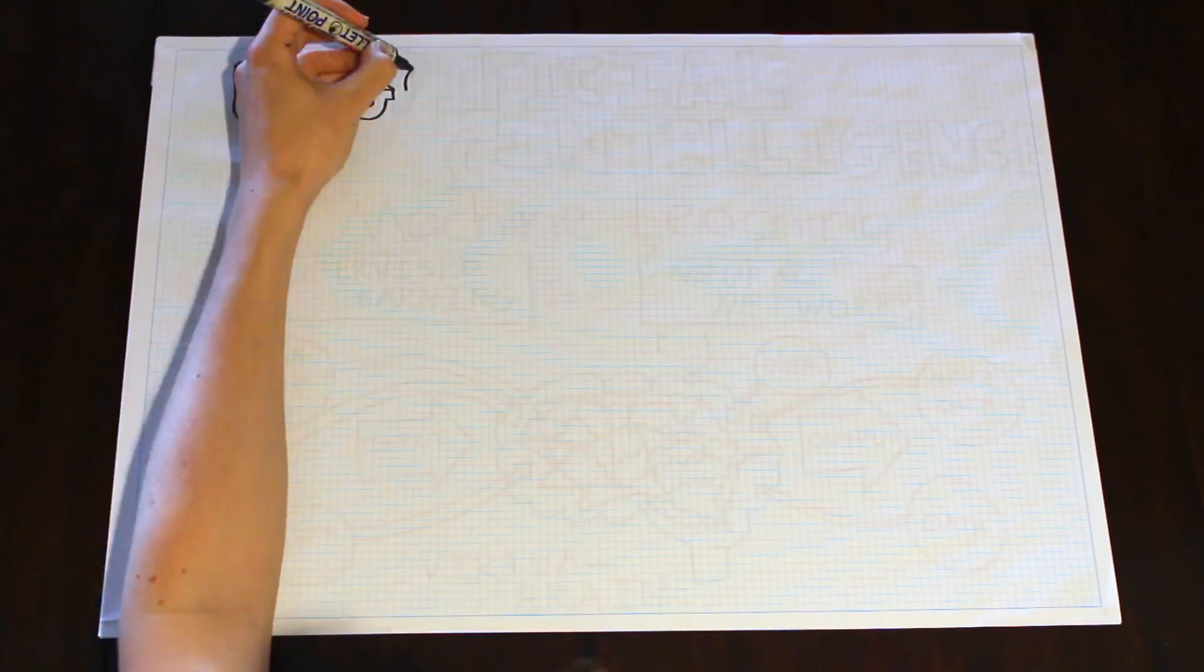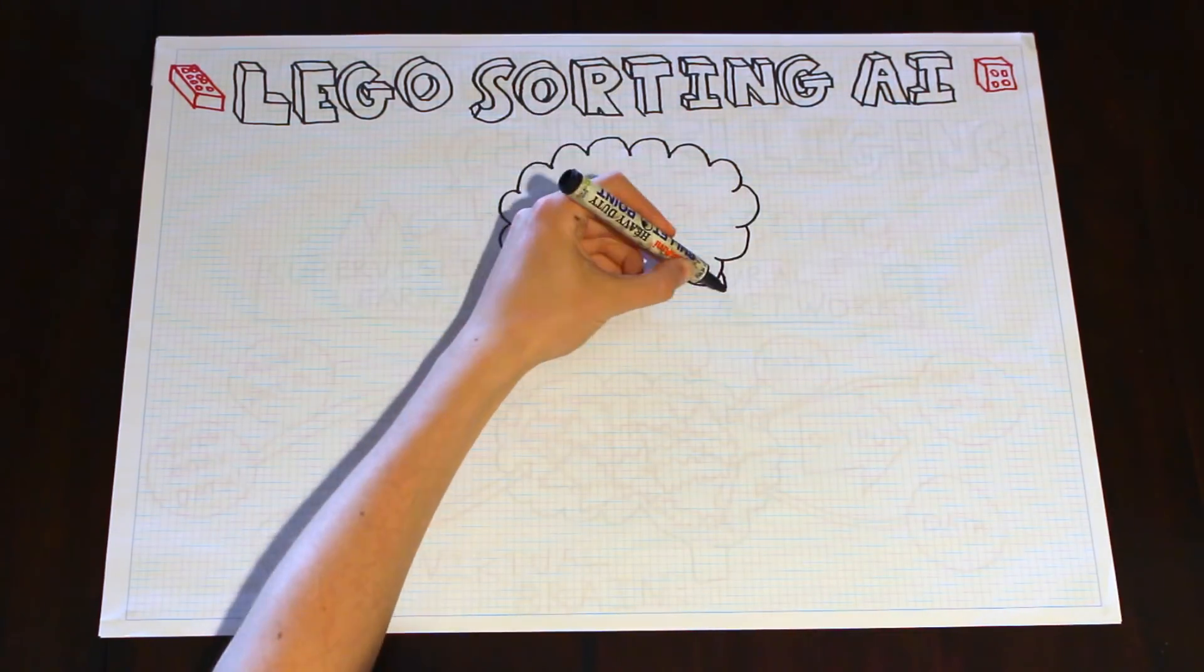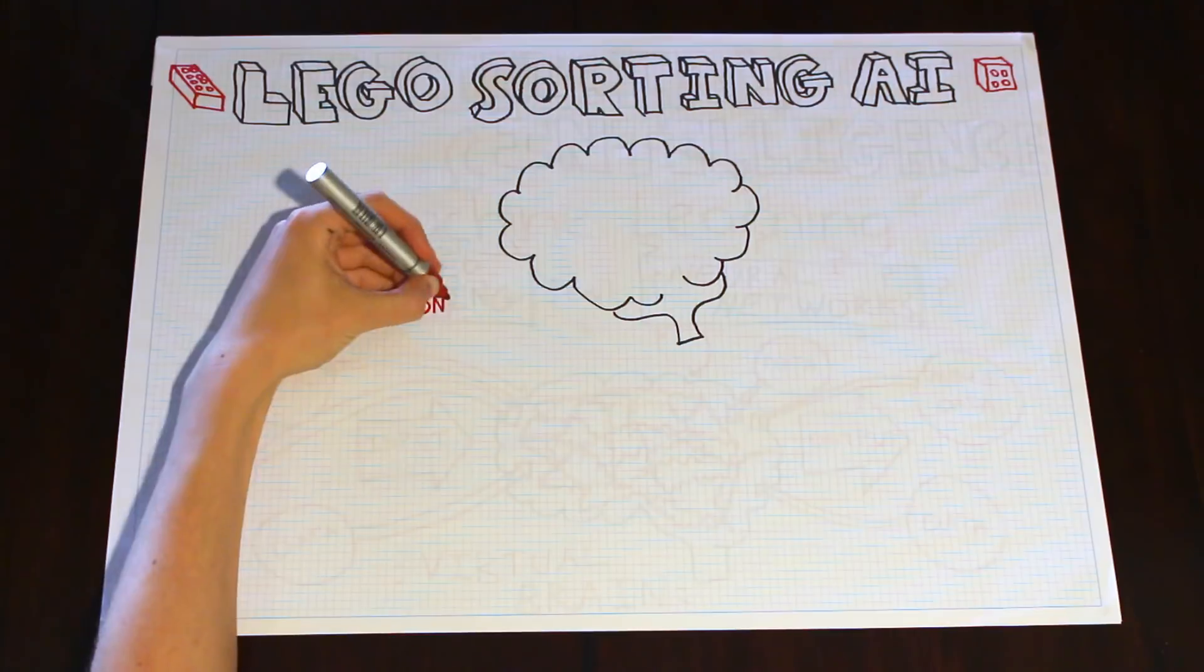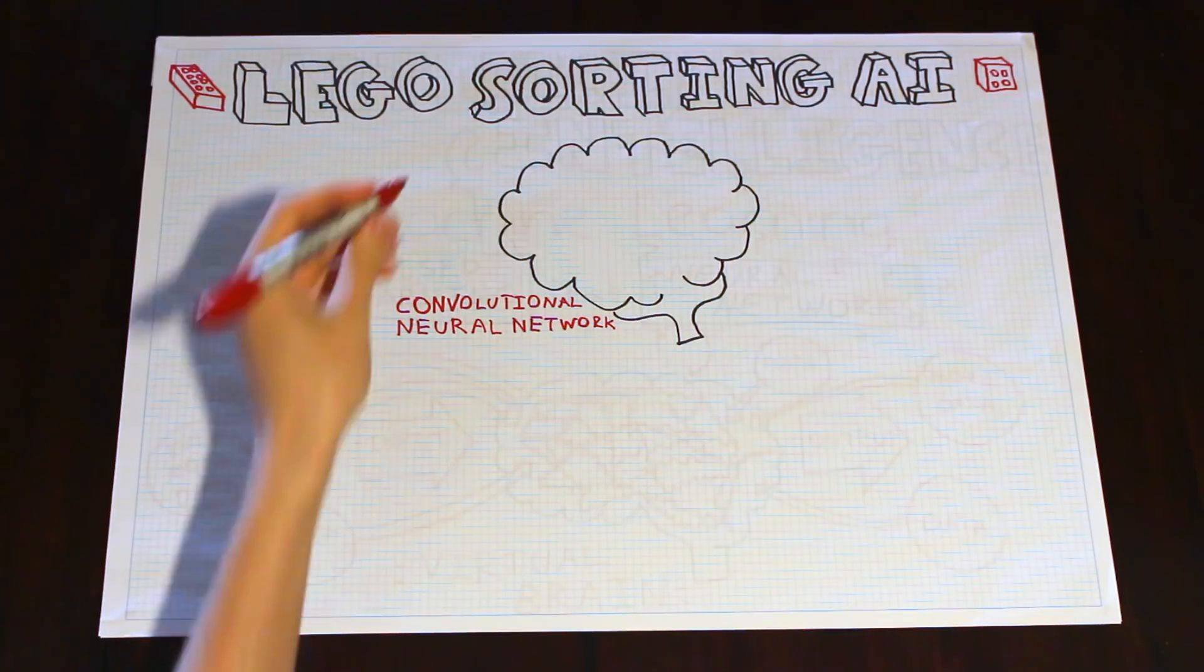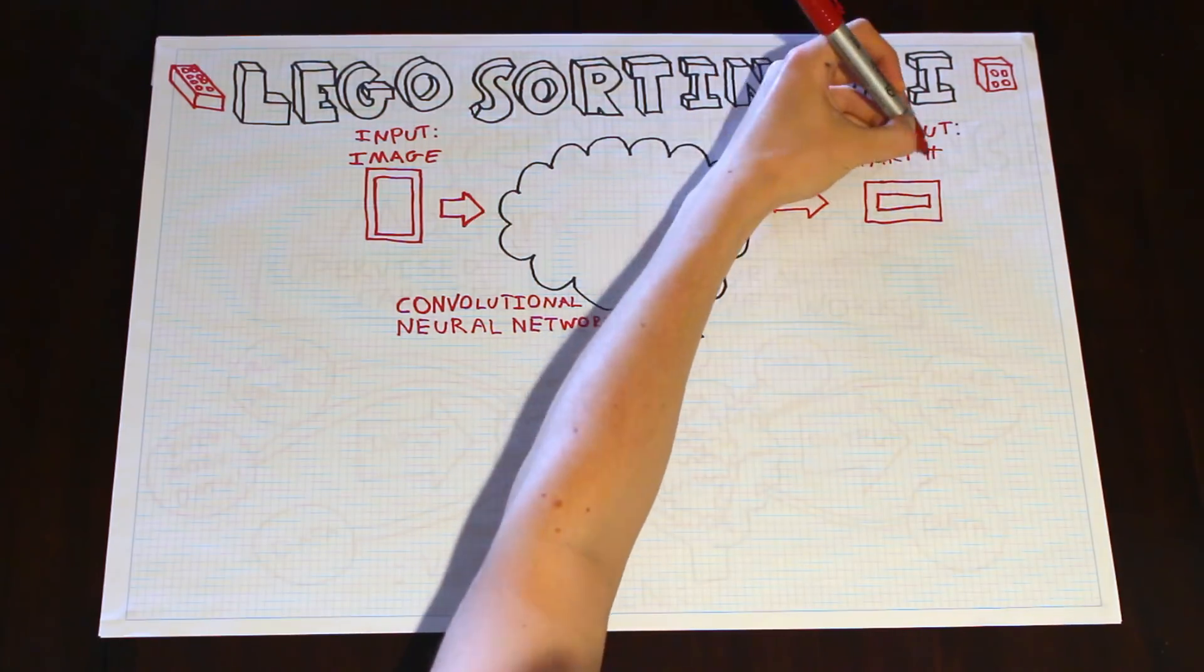Let's have a look at the LEGO sorting AI. The network design is called a convolutional neural network, which is a type of neural network that's specialized to work with images. The input to the network is an image of a LEGO part, and the output is the part number for that specific part.